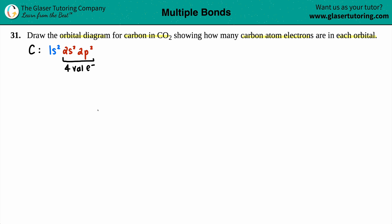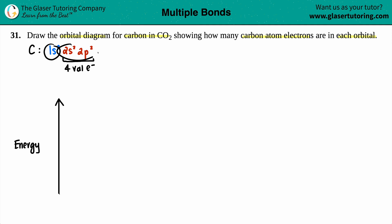Let's start our orbital diagram. We're going to show this in a couple of steps. Draw a straight line with an arrow showing energy increasing as you go up. Technically we can draw all orbitals, but only the valence are necessary since only valence electrons are the ones binding. Going from low to high energy: a 1s orbital is less energy than a 2s, which is less than a 2p. We'll start with the 2s.